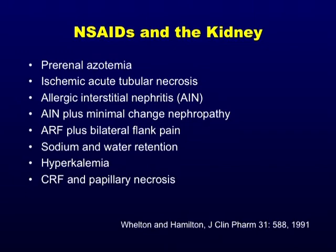Other NSAID renal syndromes include ATN in people treated with high doses, allergic interstitial nephritis presenting with a rash, white cells, white cell casts, and perhaps a little hematuria with renal dysfunction. AIN plus minimal change nephropathy is the most common nephrotic syndrome cause with NSAIDs, though membranous can also occur. Long-term NSAID use can cause chronic kidney disease and papillary necrosis. Also: sodium and water retention and hyperkalemia. Non-steroidals are loved by board question writers — be watchful.